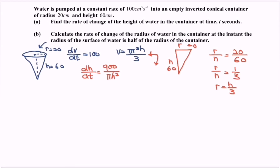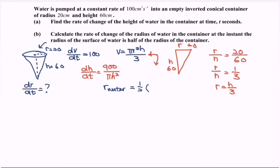Part (b): calculate the rate of change of the radius of water in the container, i.e., find dr/dt. The question states that the radius of the surface of the water is half of the radius of the container.